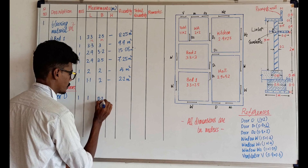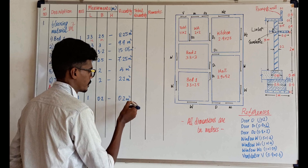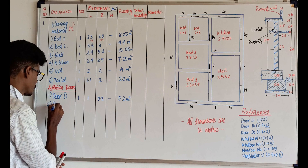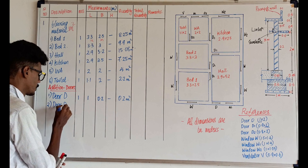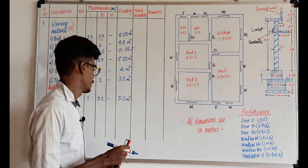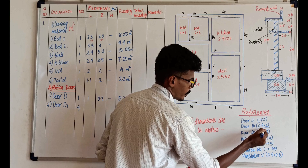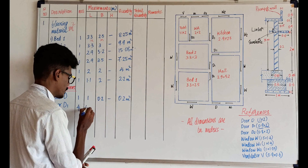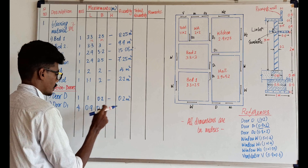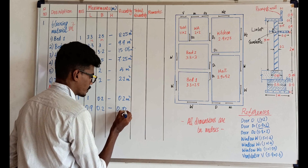The width is 0.2 meter. So the width is 0.2 meter square. Second one is Door D. Door D is 1 meter. 1, 2, 3, 4 — so the count is 4. That is the length: 0.9 meters. The width is 0.2 meter. High: blank. So the width: 4 x 0.9 into 0.2 is equal to 0.72 meter square.